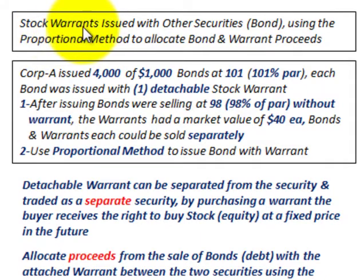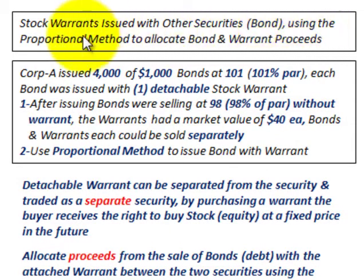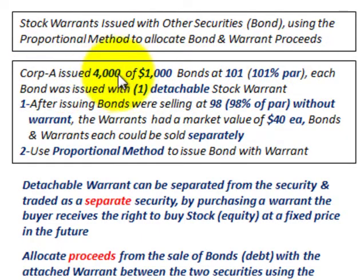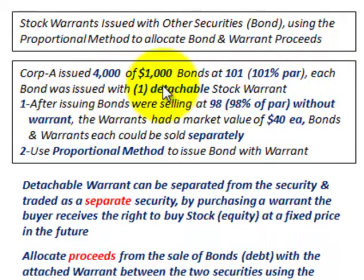We're going to be going over stock warrants that are issued with other securities. Here we'll have a stock warrant issued with a bond, and we're going to use the proportional method to allocate the bond and warrant proceeds. Corporation A issued 4,000 bonds with detachable warrants at $1,000 par value per bond, issued at 101% of par, with one detachable stock warrant per bond.